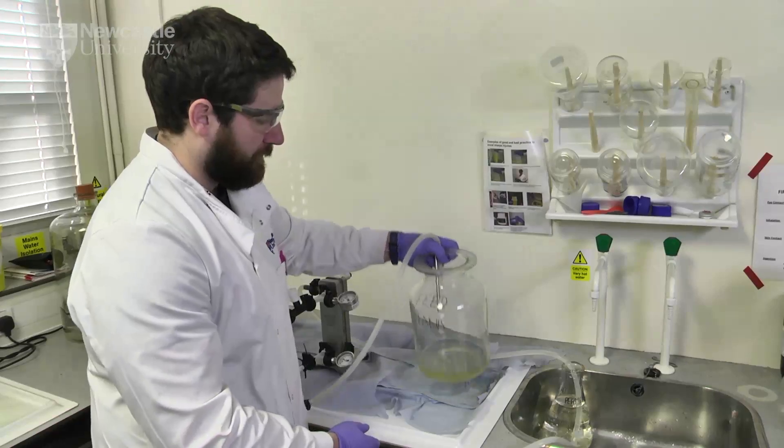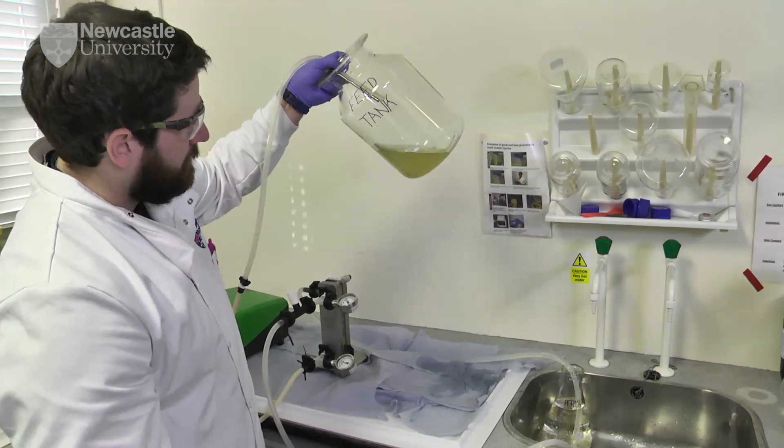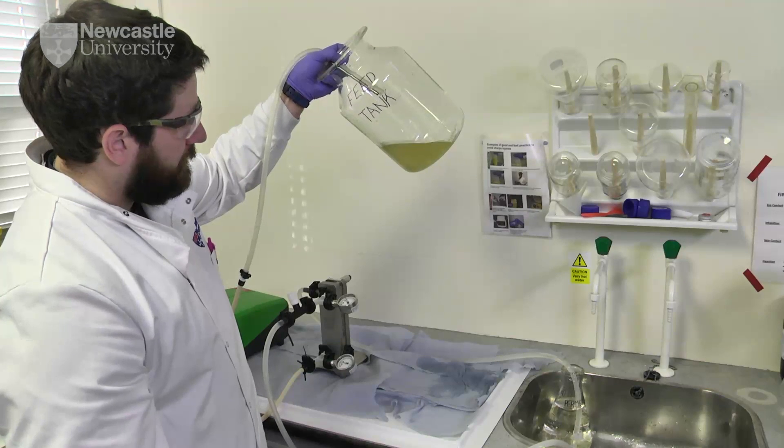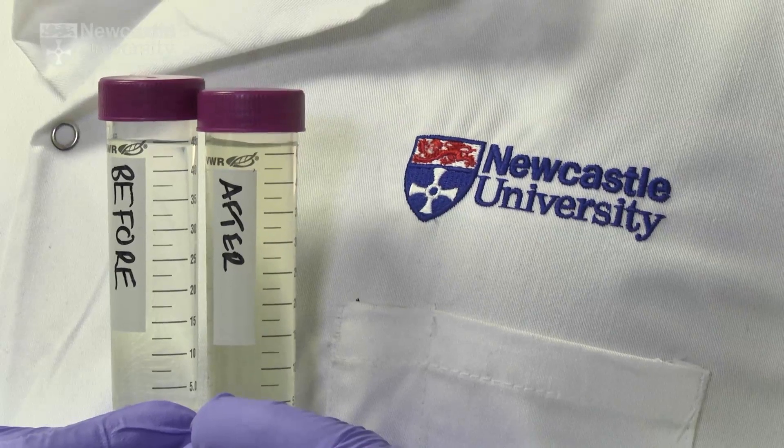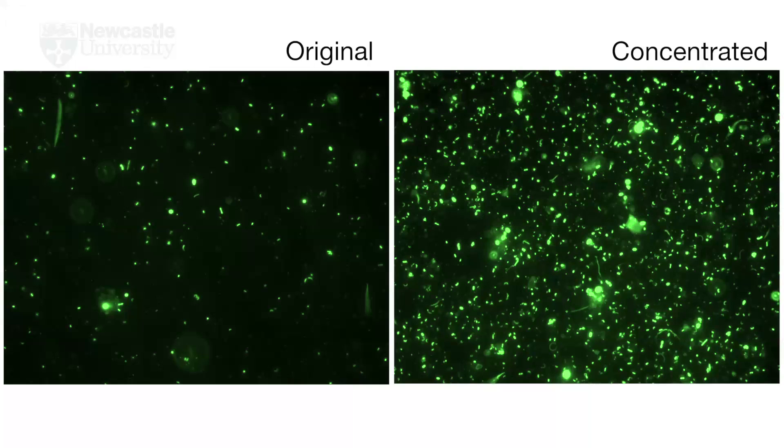Depending on the environmental sample being concentrated, the difference between the original and concentrated samples may not be apparent by eye. Total cell counts using epifluorescence microscopy clearly detail the difference in cell numbers between the original and concentrated samples.